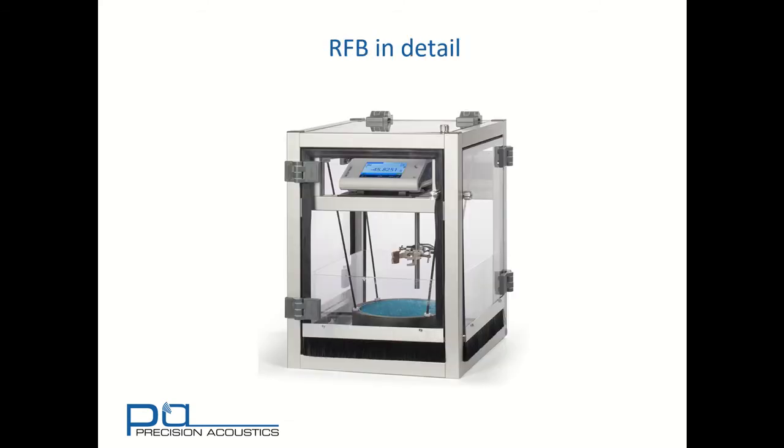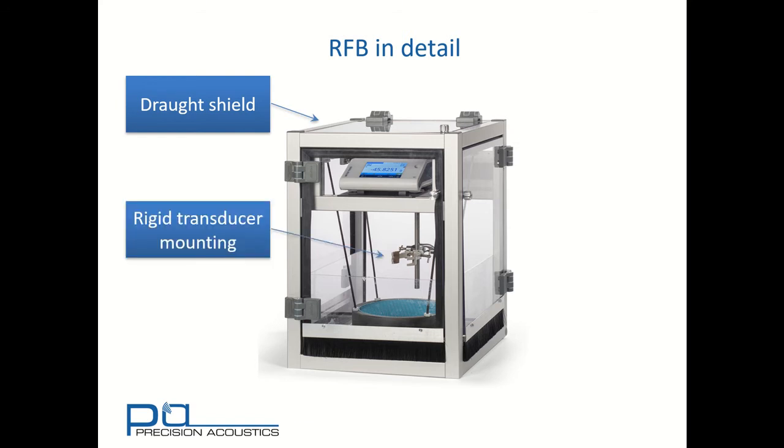Let's look at an RFB in detail. Here we can see a draft shield has been placed around the entire structure. This is to try and minimize the effect of airborne vibration and drafts affecting the measurement components. We also have a rigid transducer mounting to ensure that we've got repeatability and rigidity in the way that the transducer is held over the target. And a large absorbing target is shown here to make sure that we encompass all of the beam radiated from the transducer.